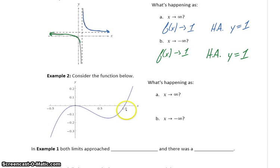So in a different graph, we want to consider the same thing. What's happening as x approaches both positive and negative infinity? So as x approaches positive infinity in this case,